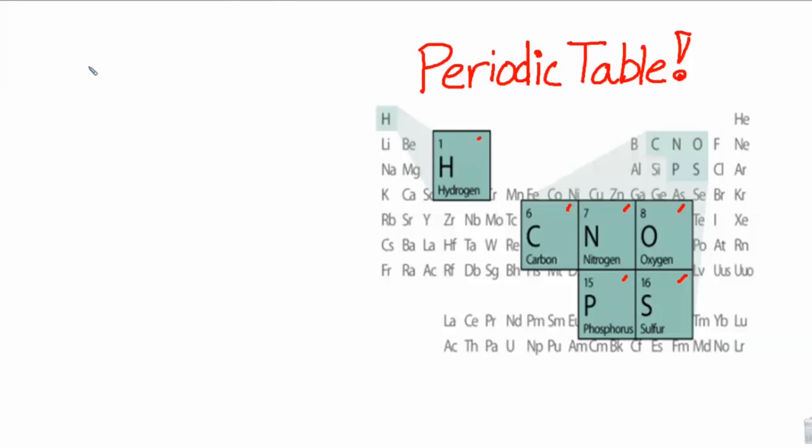Each of these types of atoms is governed by bonding rules. So, for example, let's start with hydrogen. Hydrogen likes to form a single bond with another atom. We depict it with this line.